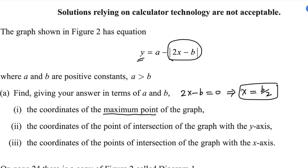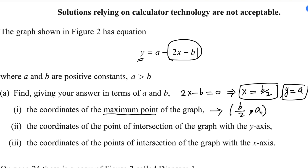When x equals b over 2, the absolute value term is zero, so y equals a. Therefore the coordinates of the maximum point are (b/2, a). This is the answer for the first part.